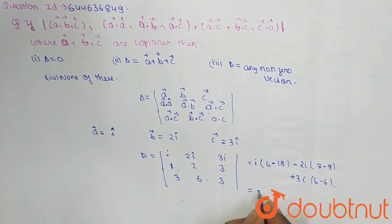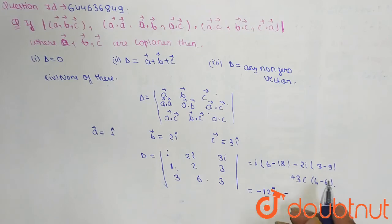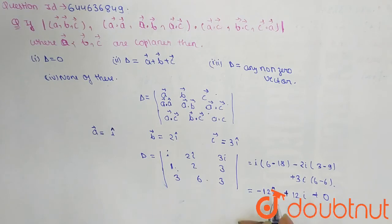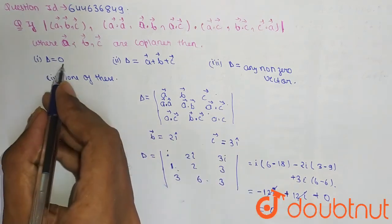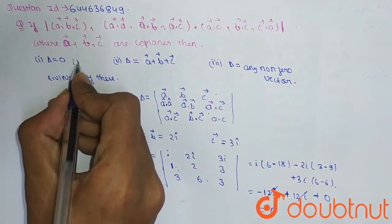So this will be minus 12I and this will be plus 12I plus 0, so this will be cancelled and our answer will be 0. So the value of delta is equal to 0, so option A is correct.